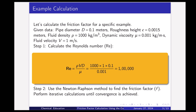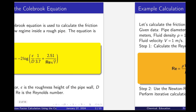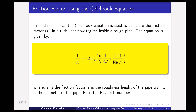First step: calculate Reynolds number. Reynolds number is ρdv/μ. If we plug in all the values, we get Reynolds number equal to 100,000. Now for the Colebrook equation, all parameters are known — ε, d, and Reynolds number — so f is what we have to calculate.